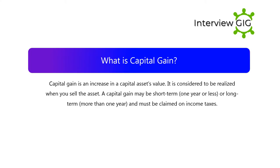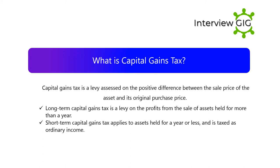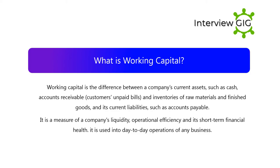What is capital gain? Capital gain is an increase in a capital asset's value. It is considered to be realized when you sell the asset. A capital gain may be short-term (one year or less) or long-term (more than one year) and must be claimed on income taxes. What is capital gains tax? Capital gains tax is a levy assessed on the positive difference between the sale price of the asset and its original purchase price. Long-term capital gains tax is a levy on the profits from the sale of assets held for more than a year. Short-term capital gains tax applies to assets held for a year or less and is taxed as ordinary income.